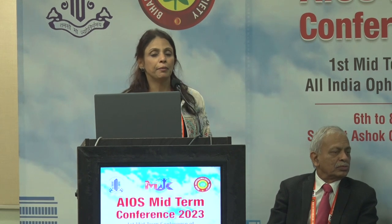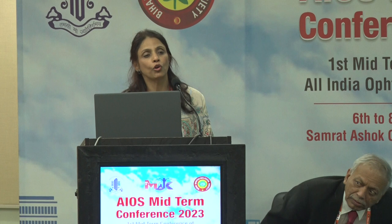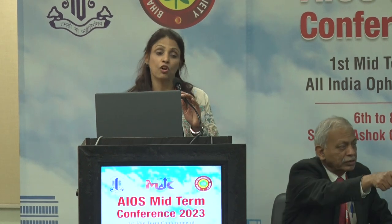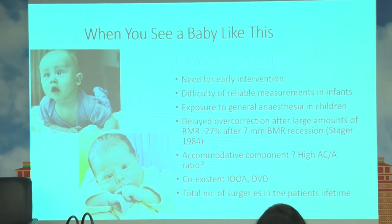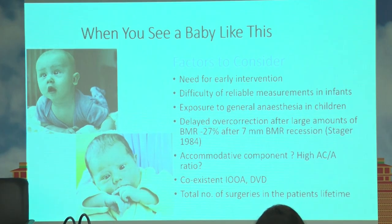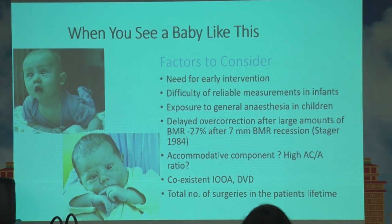Whenever we see a baby like this — as shown in these photographs — we need to ask: do we need to intervene early? What is the reliability of measurements in children? This is very difficult because this is a period when exposure to general anesthesia is a concern. Larger and longer the number of exposures, all these are very harmful for the brain of the developing child. We also have to look for delayed overcorrections, especially if we are doing large amounts of surgery in these children.